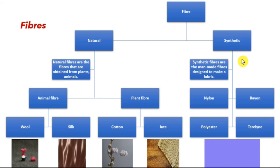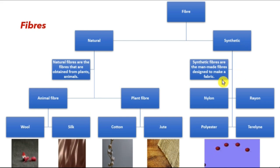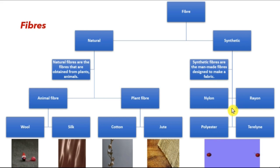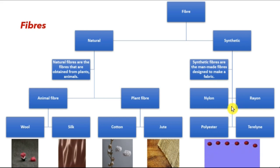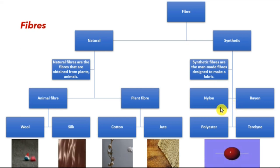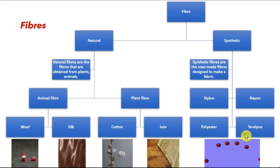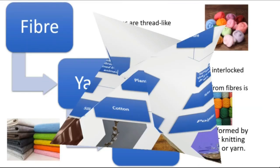Synthetic fibers are man-made fibers designed to make fabric. They are made in factories by human beings and not found in nature. Some examples are nylon, rayon, polyester, and terylene.